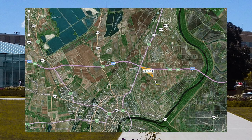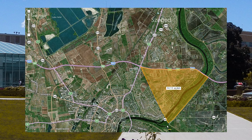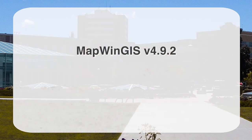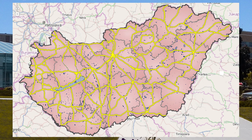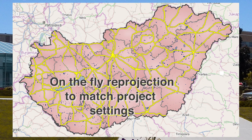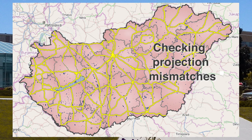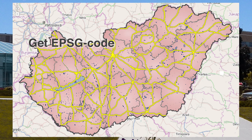A measuring tool built into the MapWin GIS ActiveX control supports in-control measurement of paths and areas, with snapping to features, activated simply by pressing the M hotkey. With the upcoming version 4.9.2 release, 24 new functions will be added, including a new zoom bar and enhanced handling of online tiles. The ActiveX control now also features improved projection support with on-the-fly reprojection for layers and tiles, checking for mismatched projections, getting EPSG codes, and using the latest EPSG database.